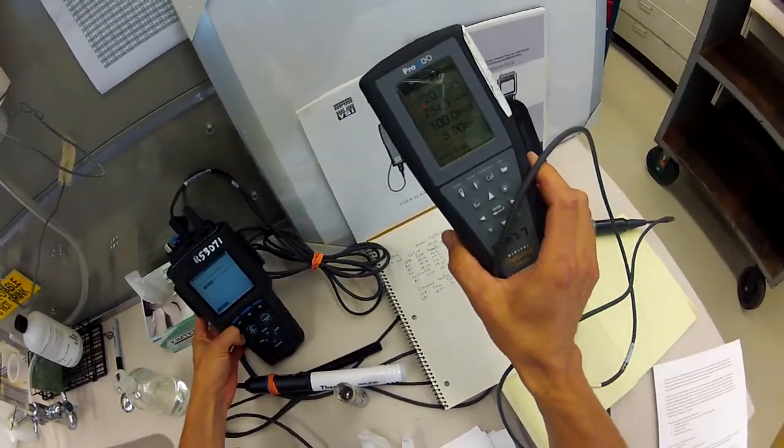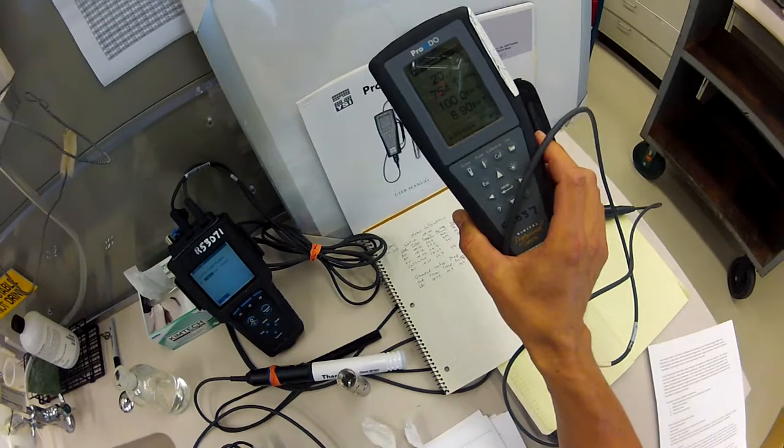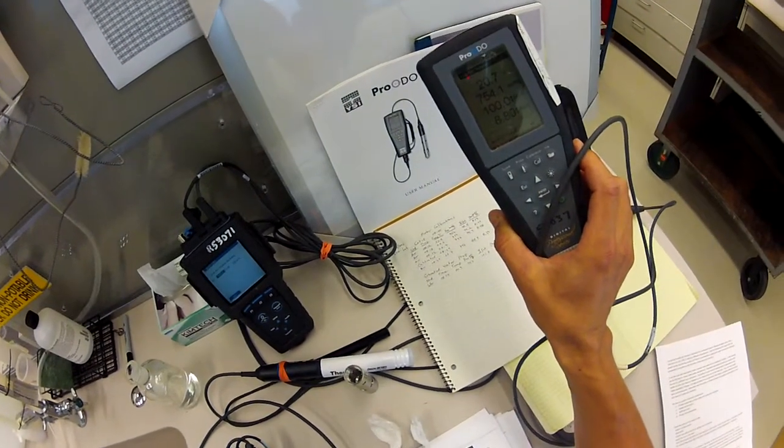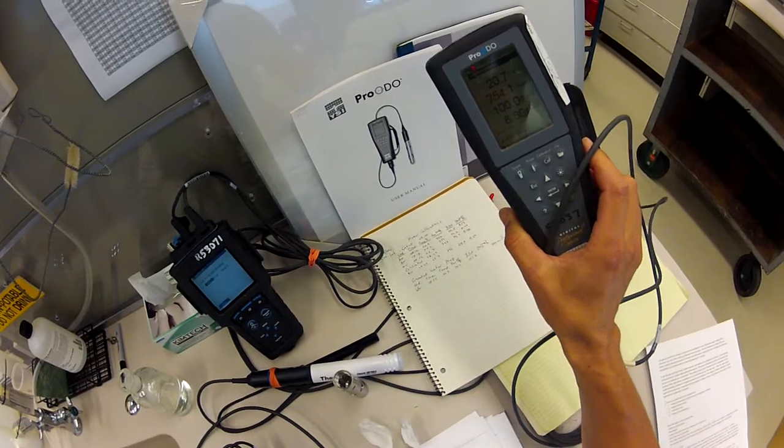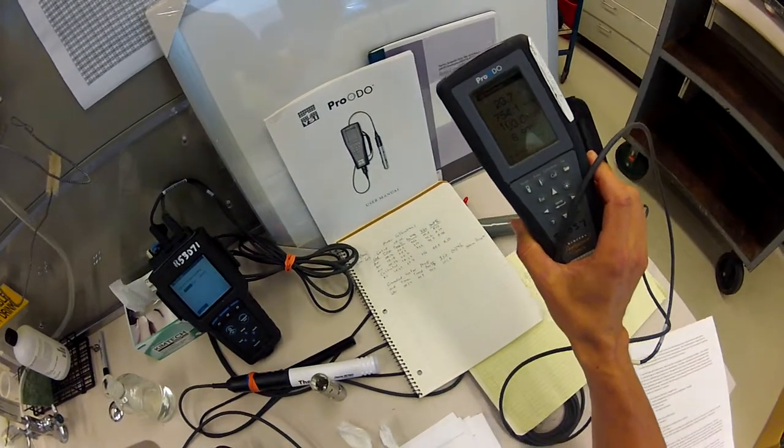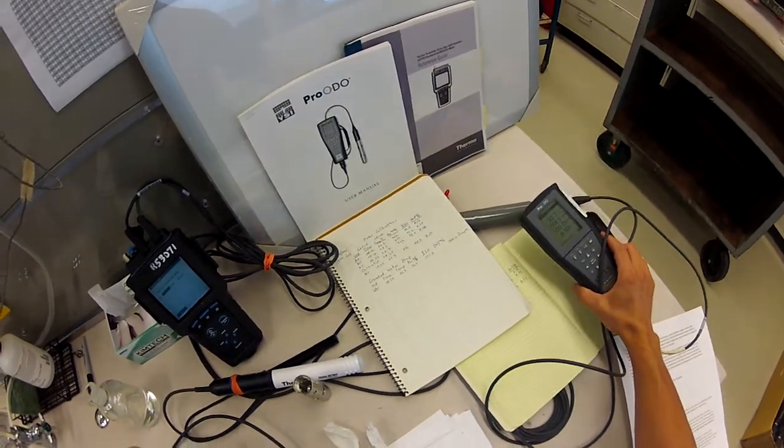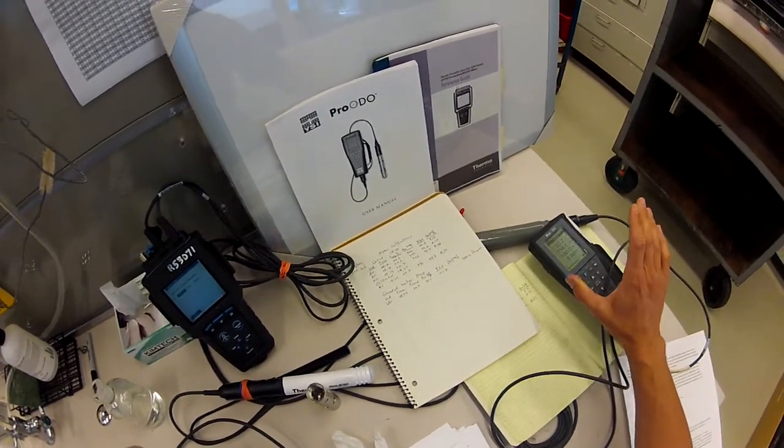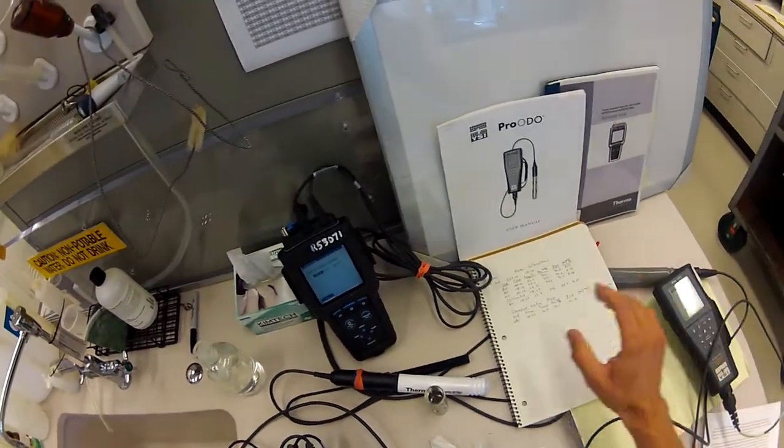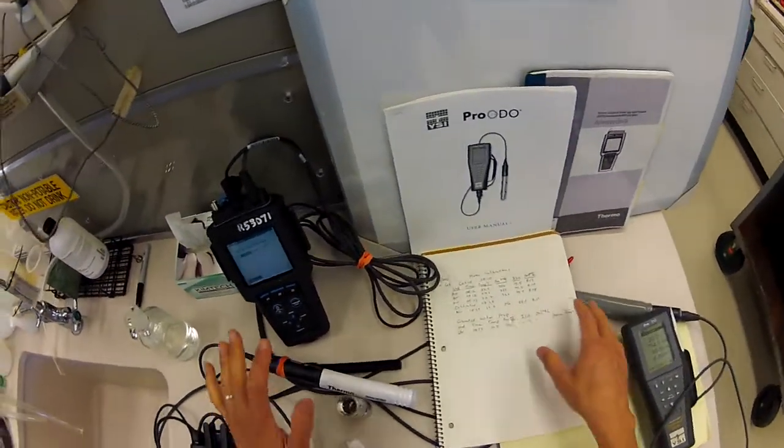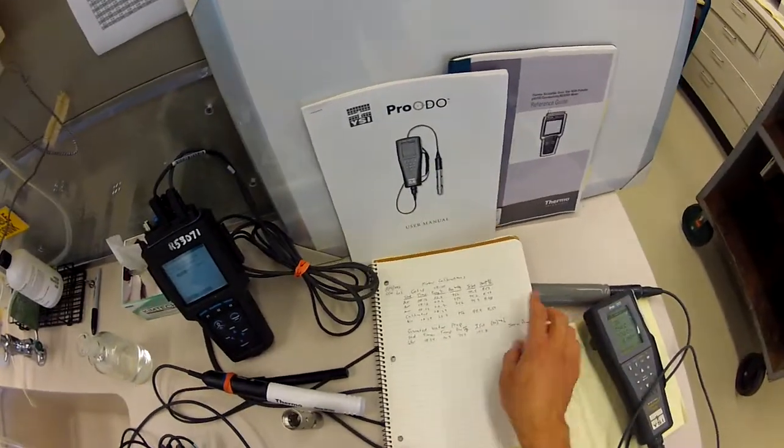If you're using the YSI, you want to make sure when you're doing your calibration that you are working in percent local - that's referring to the barometric pressure. Sometimes, particularly YSI meters in our experience, will give you a corrected barometric pressure at the sea level, and you want the local barometric pressure.